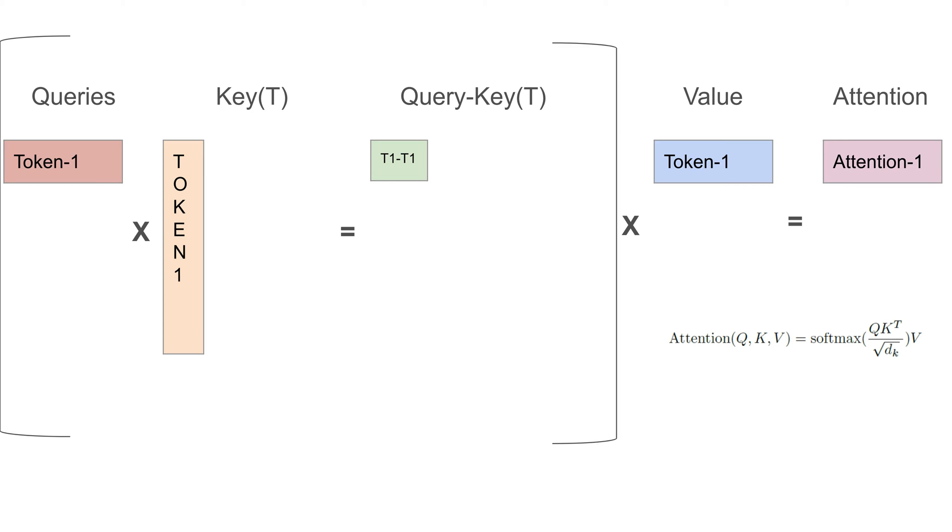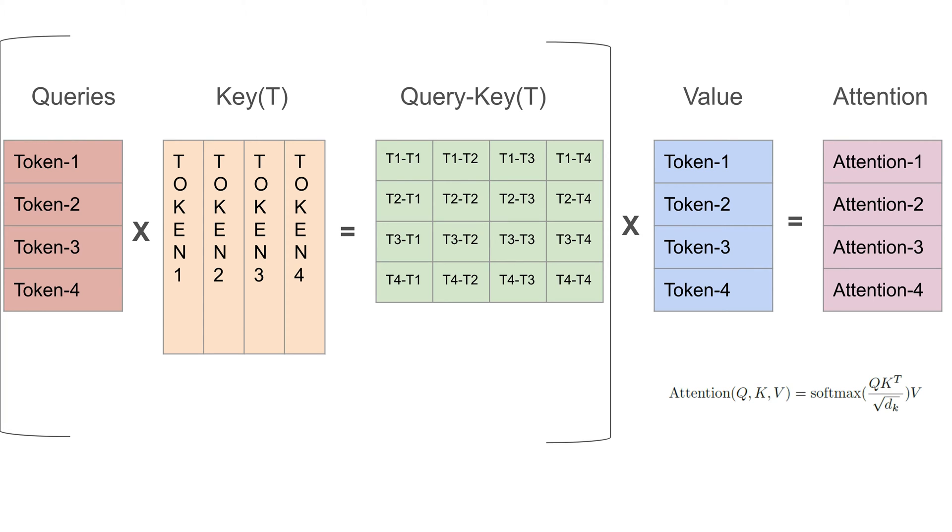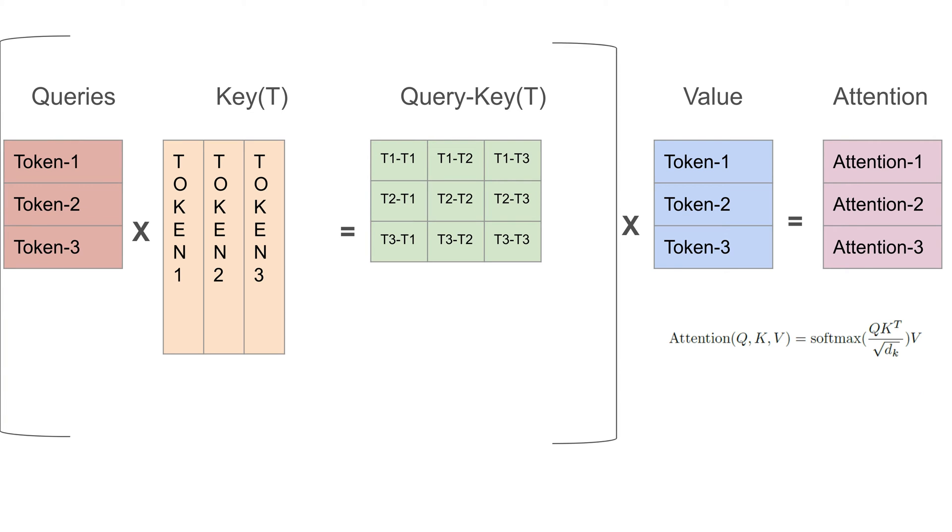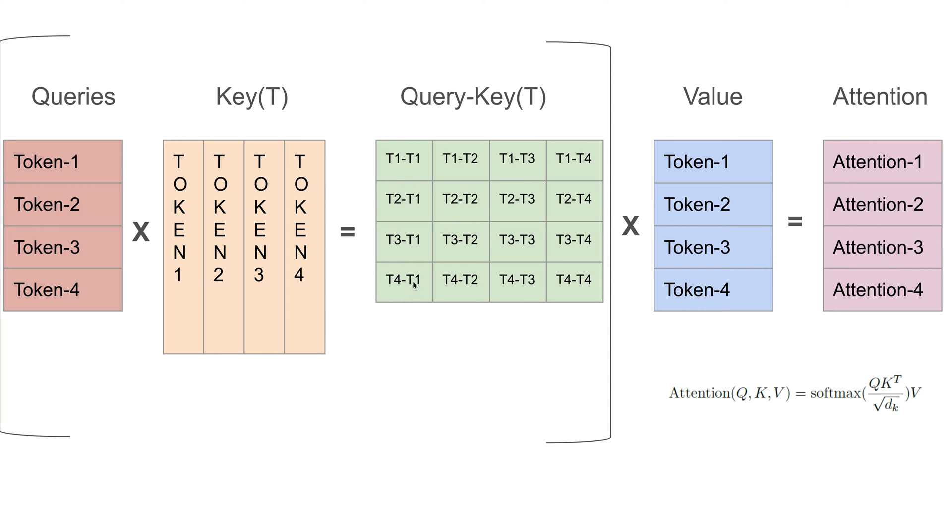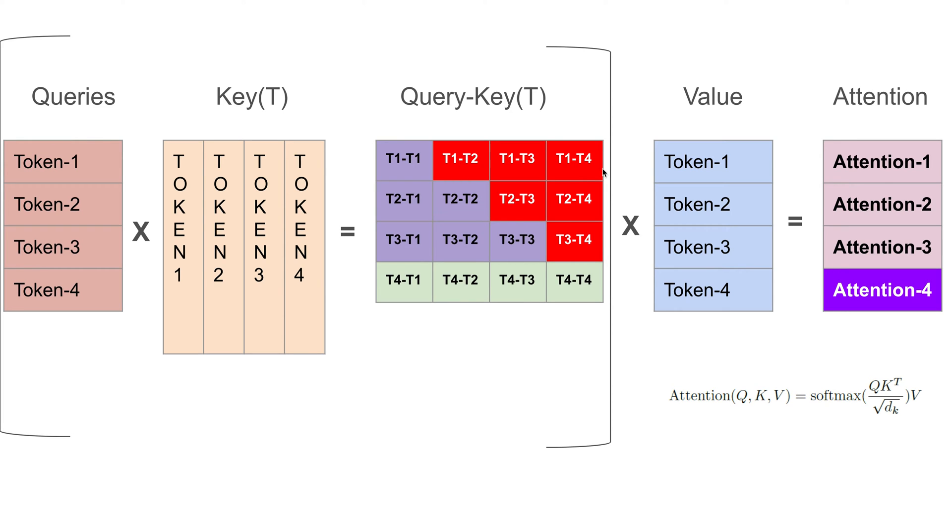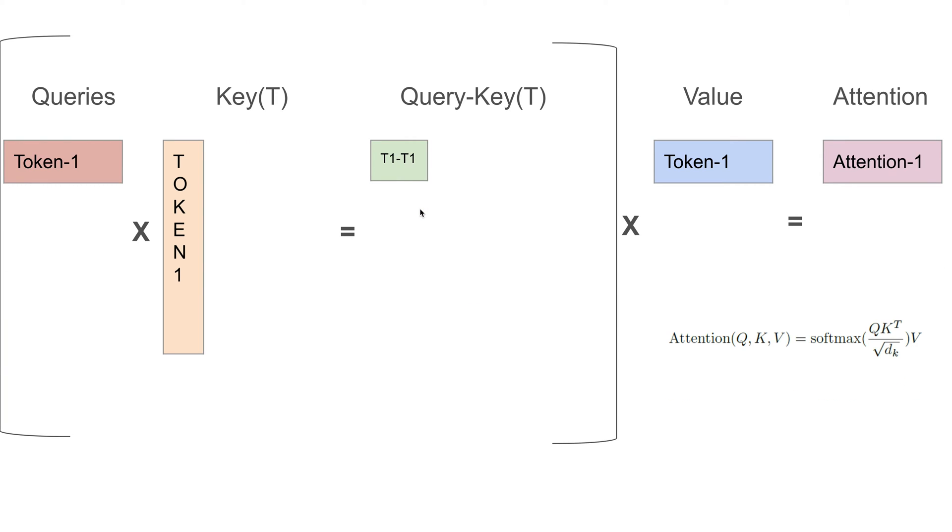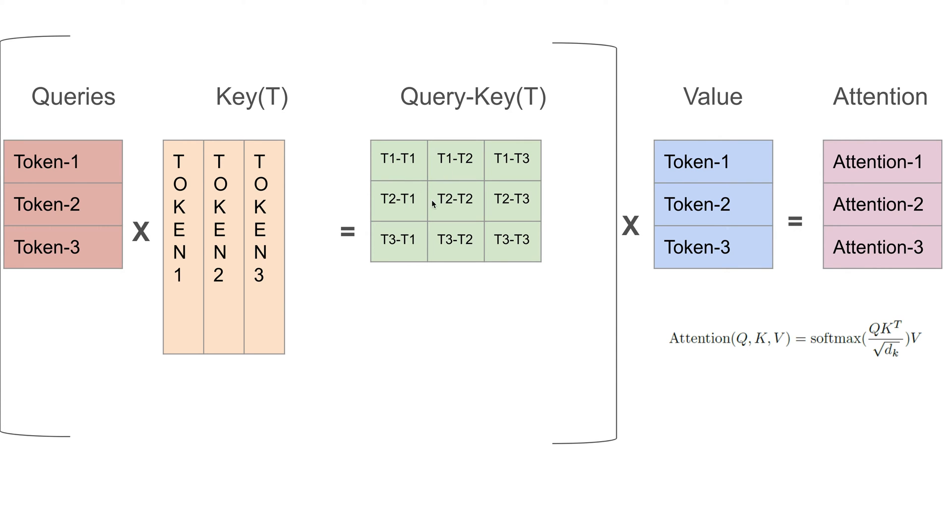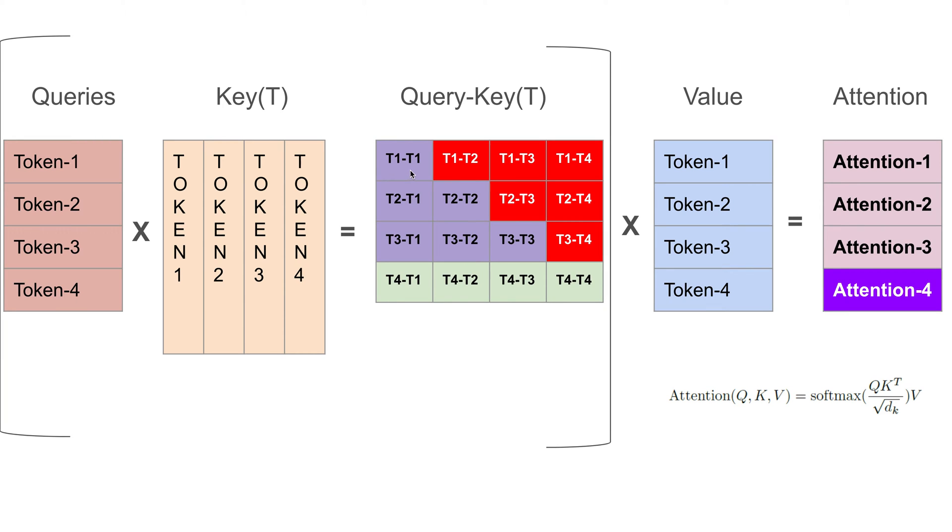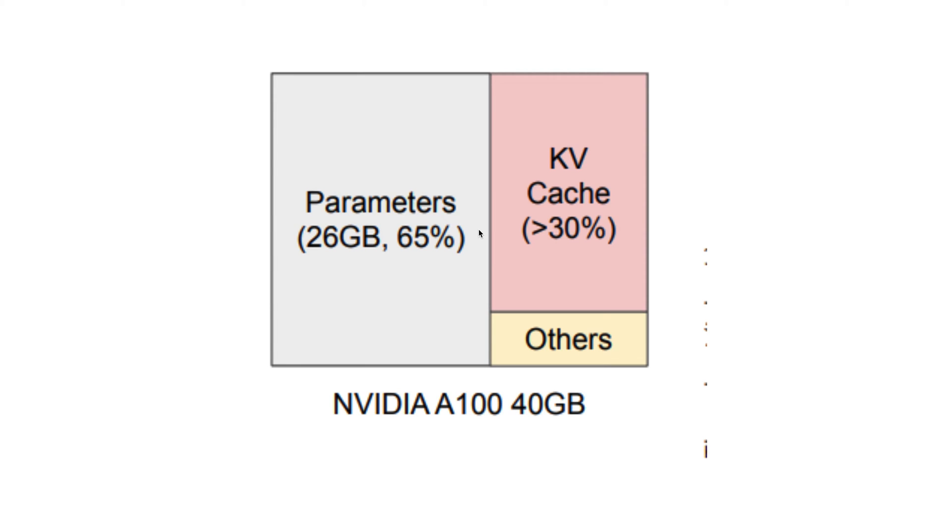We have talked about this in the KV cache video, but let's revise it. You can see here as we generate queries, key, and value, we get the attention. Every time we're calculating this and we know we don't need the future tokens because we're masking the model. We only require this part. Why do we need to calculate this again? We're calculating this again even though we had calculated it previously, so why can't we cache this? We're caching this particular part - this is known as key-value cache.